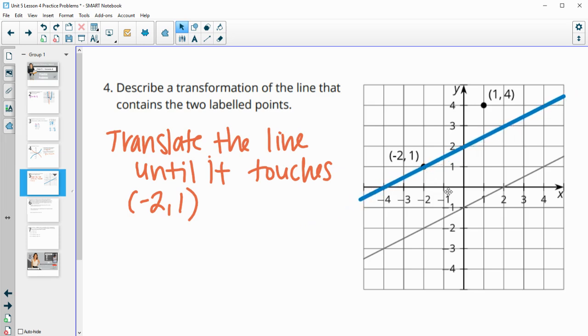Again it doesn't matter where this line is moving on there. That's why we don't just say translate up three units. I mean you certainly could translate it up three units because then this point would land exactly there. But it's not the only way that you can do that. So I'm just going to say translate the line until it touches the point negative 2,1. Then we need it to go through this point. So this needs to stay the same. This one needs to stay set. And then we just need to turn this or rotate it.